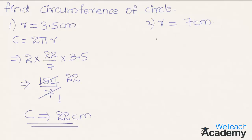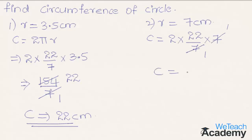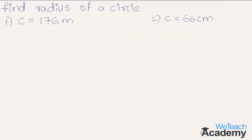Coming to the second one where radius is equal to 7 centimeters — by substituting the value of radius in the formula we get C equal to 2 into 22/7 into the radius 7. Simplifying: 7 one time is 7, so by multiplying 2 into 22 we get C equal to 44 centimeters.